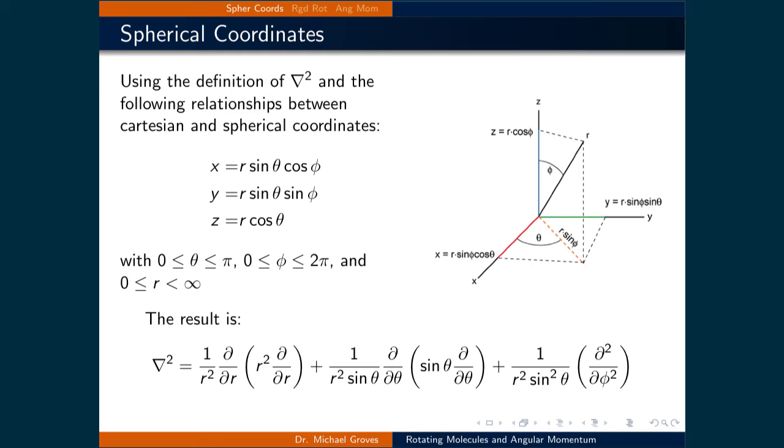These substitutions can be easily taken care of. One good reason for writing the Schrödinger equation using the Laplacian is that if we were to change basis sets, like we are here from Cartesian coordinates to spherical coordinates, then we would just need to use the Laplacian for the new coordinates instead.